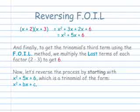Now let's reverse the process by starting with x squared plus 5x plus 6, which is a trinomial of the form x squared plus bx plus c.